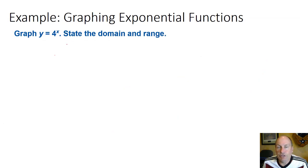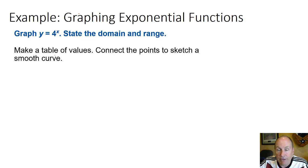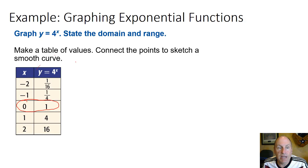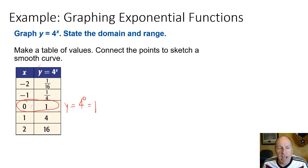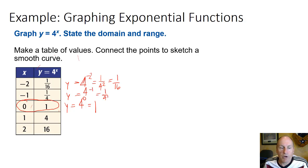Let's look at graphing exponential functions with an example: y = 4^x. We want to graph it and state the domain and range. As with any function, we make a table of values. One value you always want to use is x = 0. In any unmodified exponential function this gives the point (0, 1), because 4 to the 0 is 1. For x = -2, y = 4^(-2) = 1/16. For x = -1, y = 4^(-1) = 1/4.